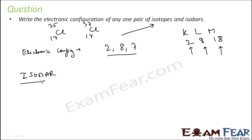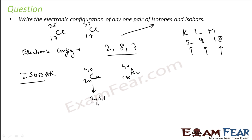For isobars, let's take calcium and argon. Both have atomic mass 40 but different atomic numbers, so their electronic configurations will be different. For calcium (atomic number 20): first 2 go to K, next 8 go to L, then we have 10 remaining. Can we put 10 in M? No — the outermost shell can accommodate a maximum of 8. So calcium's configuration is 2, 8, 8, 2. For argon (atomic number 18): 2 go to K, 8 go to L, remaining 8 go to M — so it's 2, 8, 8.